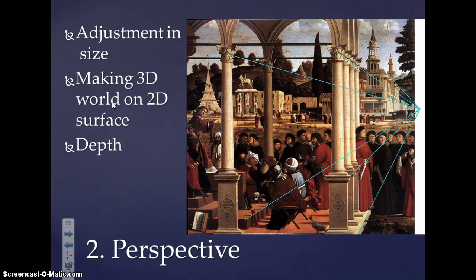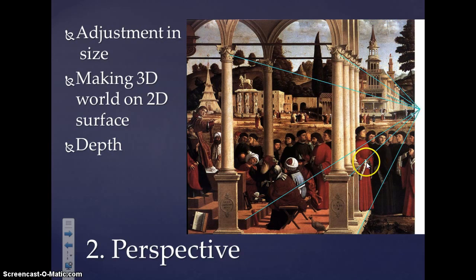The second characteristic is the use of perspective in artwork. Perspective means adjustment in size, which allows artists to convey images that appear three-dimensional on a two-dimensional surface like a canvas. In the image on the screen, the buildings in the background appear much smaller than the people in the foreground, showing they are meant to be in the distance — similar to how doors at the far end of a hallway seem very small but get larger as you approach. Renaissance artists were able to convey that illusion of depth in paintings.